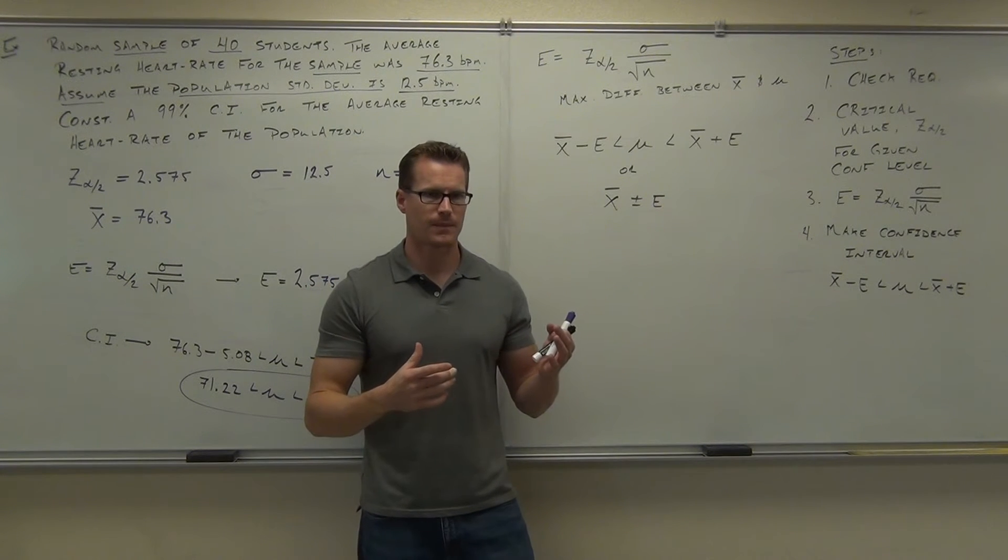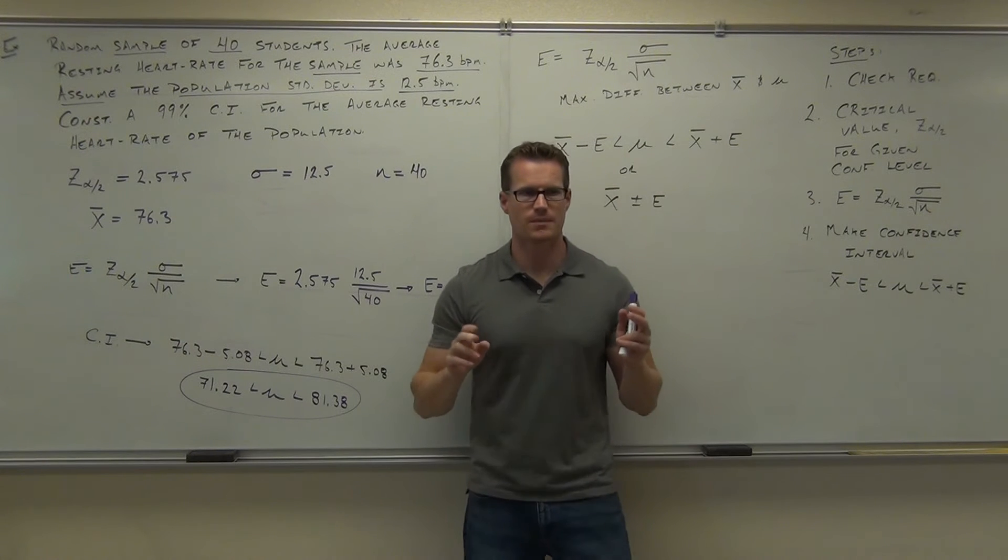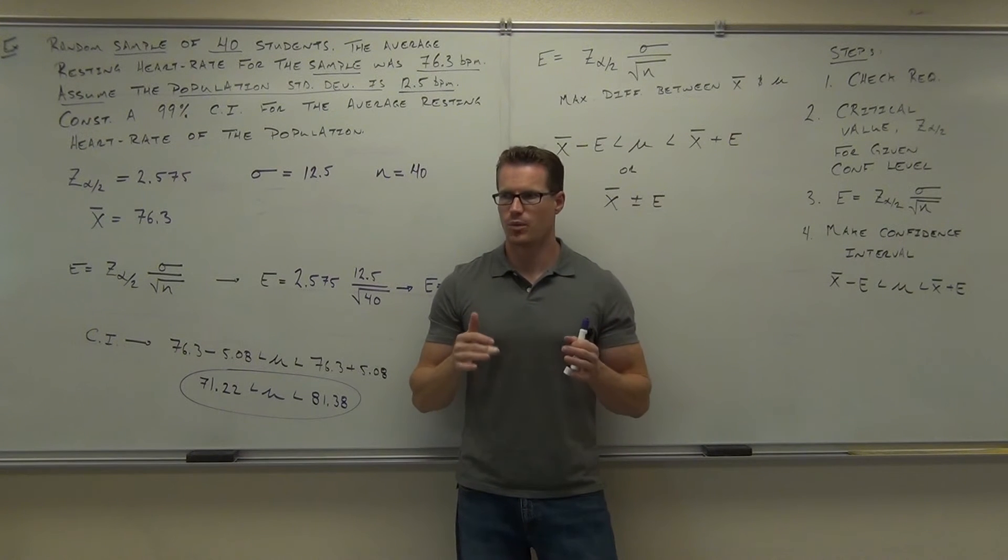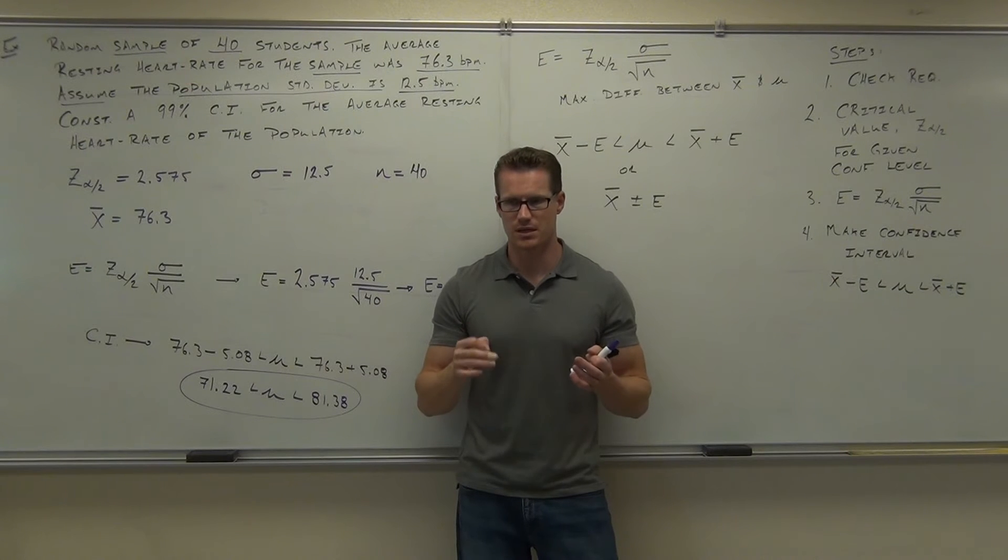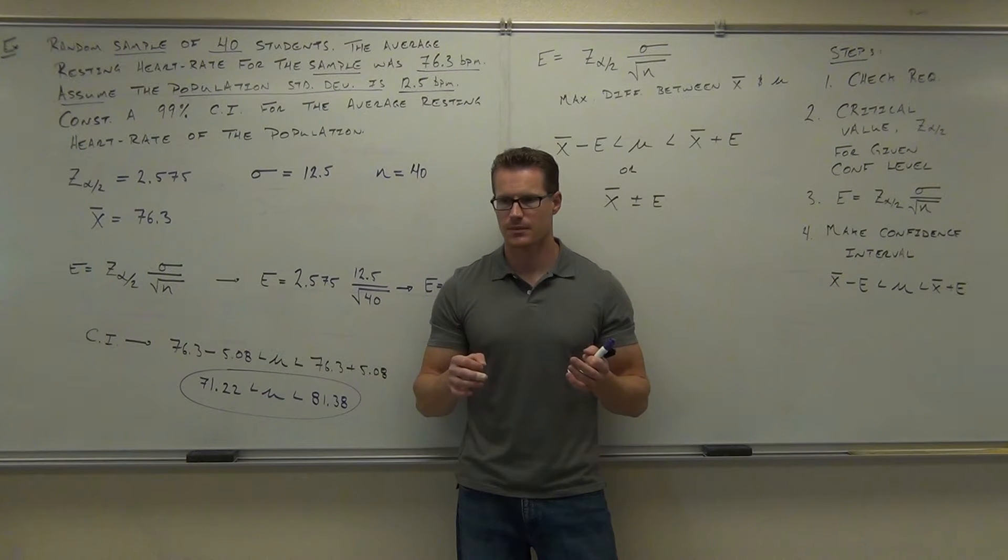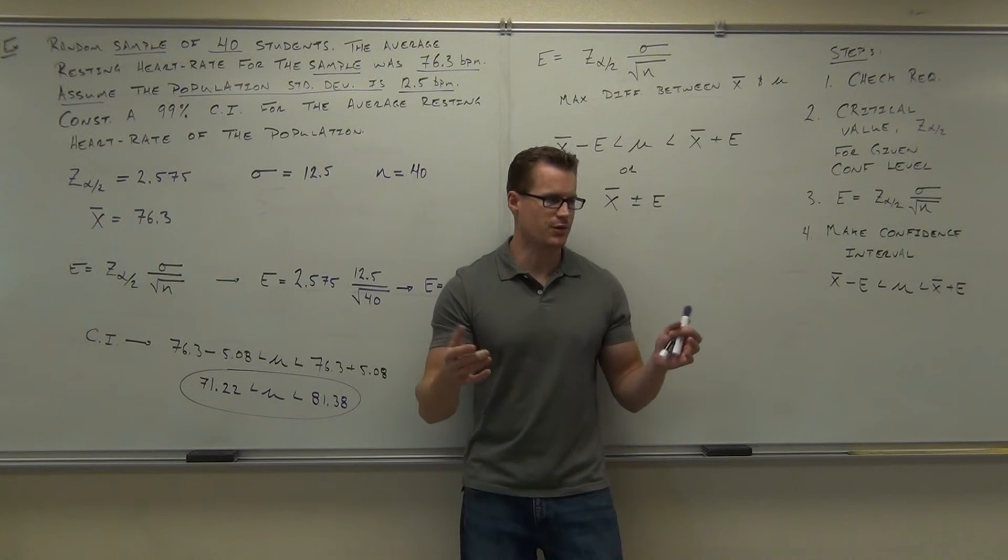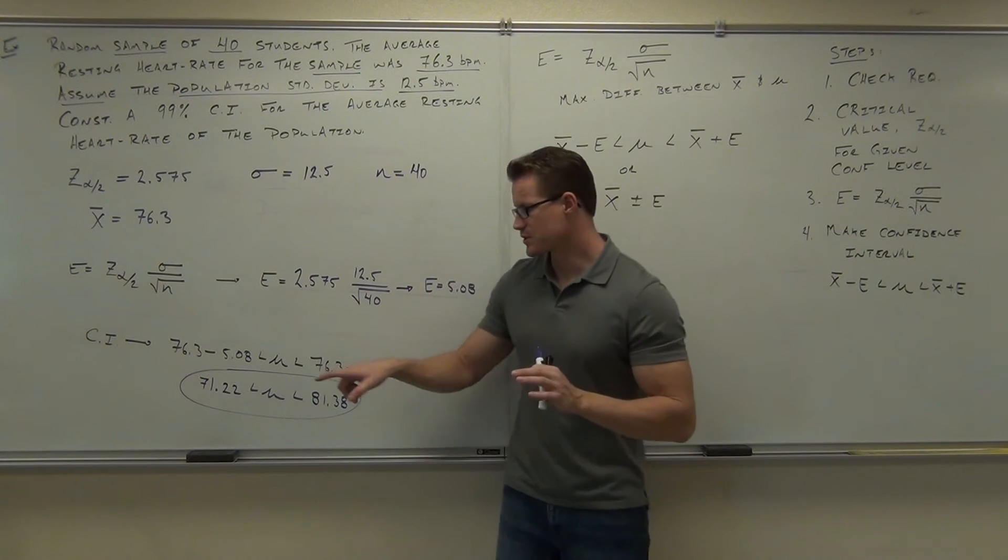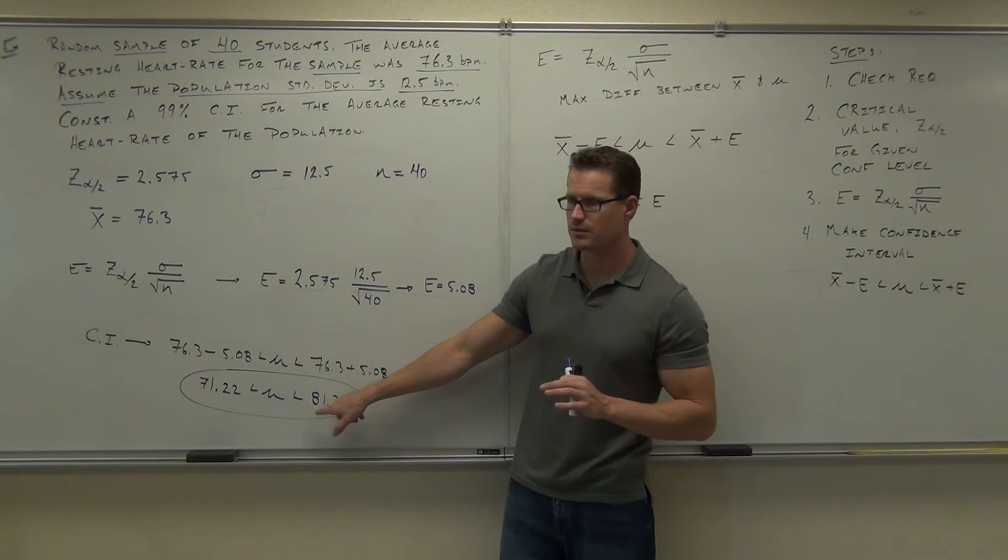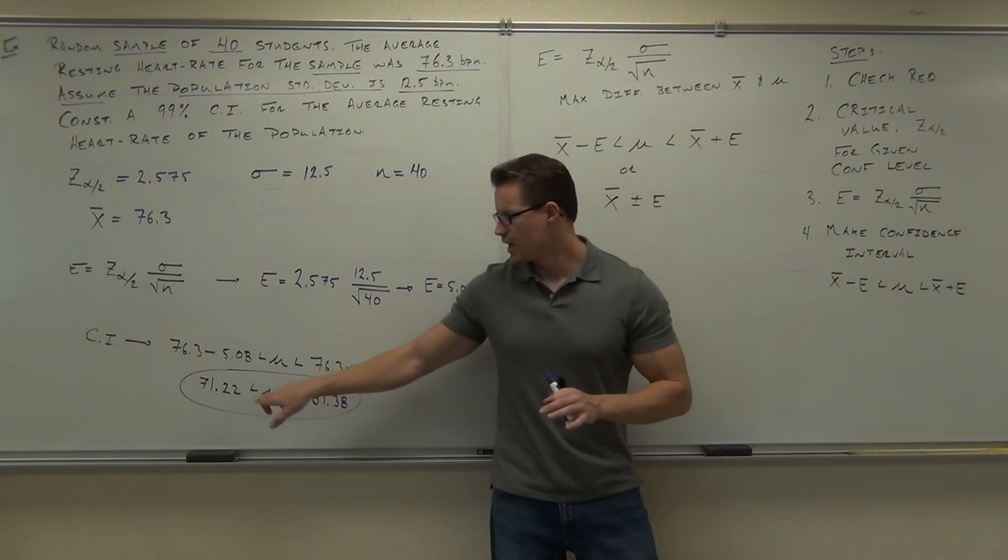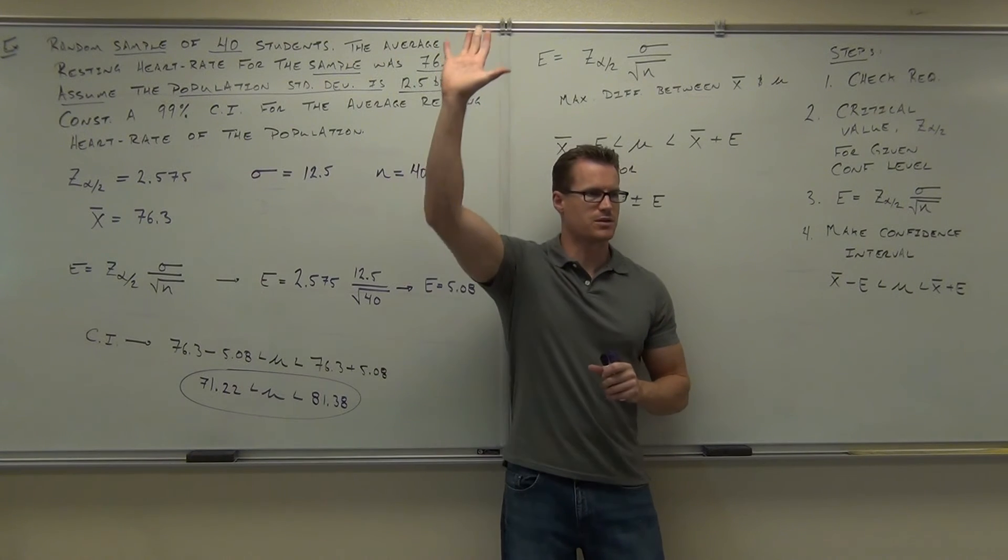How confident are we? 99%. So our interpretation is this, if you want to write this down again in quotations. Don't know what the exact value of the population mean is. But I am 99% sure, or 99% confident, I'm 99% sure it will fall in this range, between 71.2 beats per minute and 81.4 beats per minute. I don't know what the actual value is, but I'm 99% sure it's going to be between 71 and 81, basically. Does that make sense to you? How many people feel pretty good about this so far? Good deal.